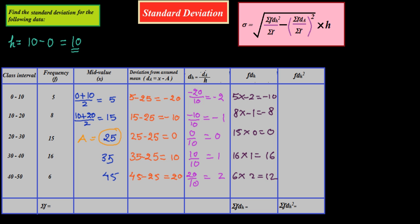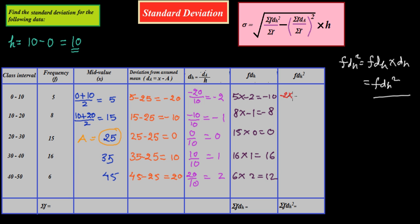Now we find FDH², which we get by multiplying FDH by DH again. So: (−10) × (−2) = positive 20, (−8) × (−1) = positive 8, 0 × 0 = 0, 16 × 1 = 16, and 12 × 2 = 24. These are our FDH² values.